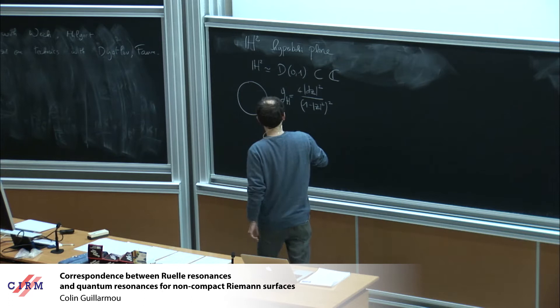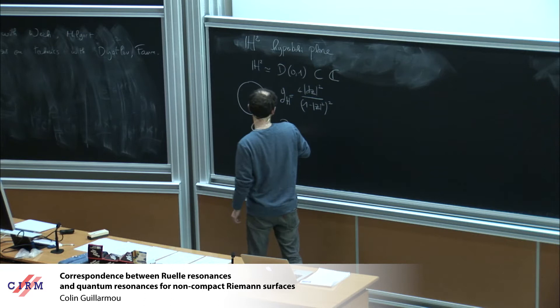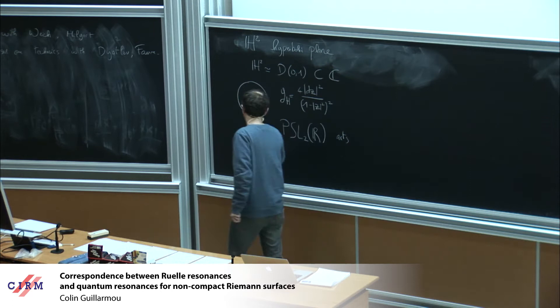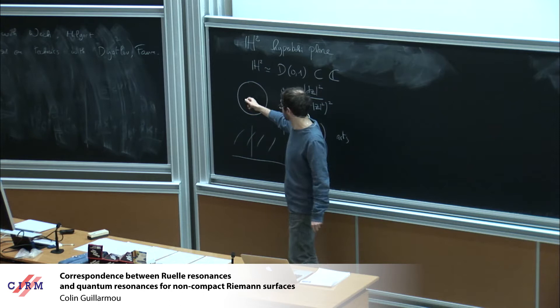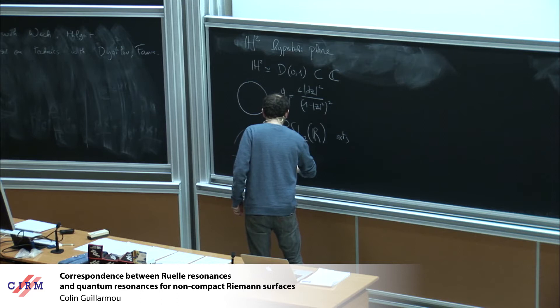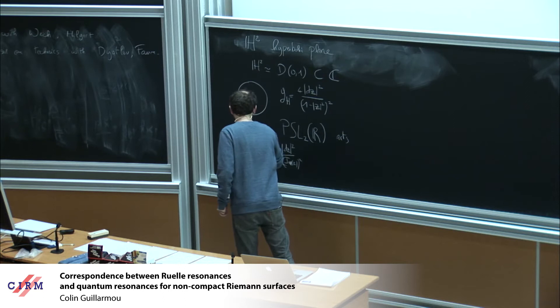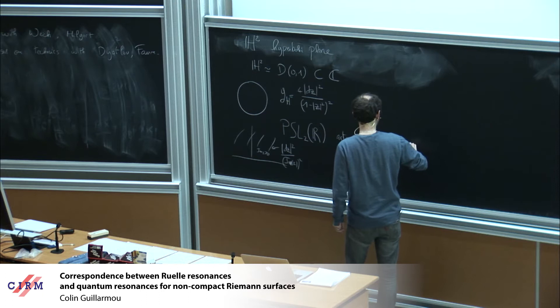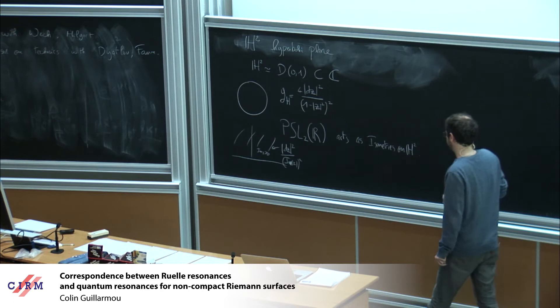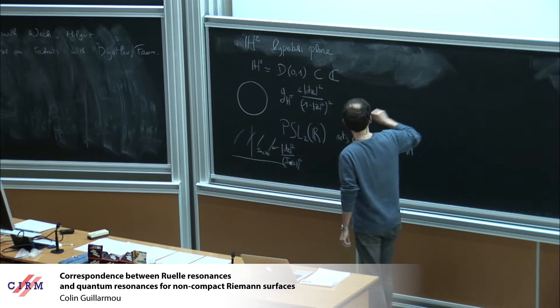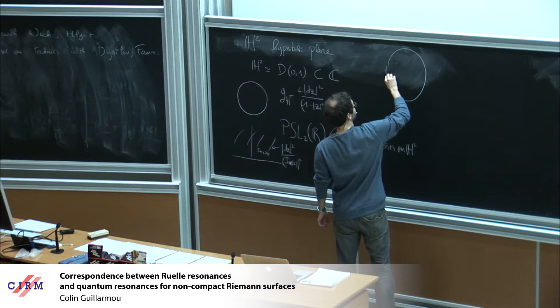You have a group acting, which is SU(1,1), isomorphic to PSL(2,ℝ). PSL(2,ℝ) acts on the half-space model of the hyperbolic plane, which is conformally equivalent and isometric to this disk model, where the metric would be ds² = |dz|²/(Im z)². It acts as isometries on H² preserving orientation. You can also view PSL(2,ℝ) as a subgroup of PSL(2,ℂ), and PSL(2,ℂ) acts on the Riemann sphere.